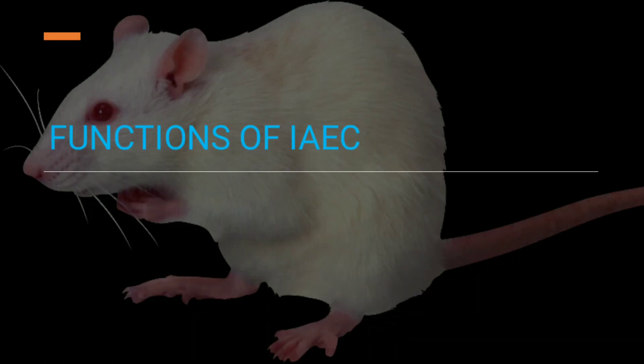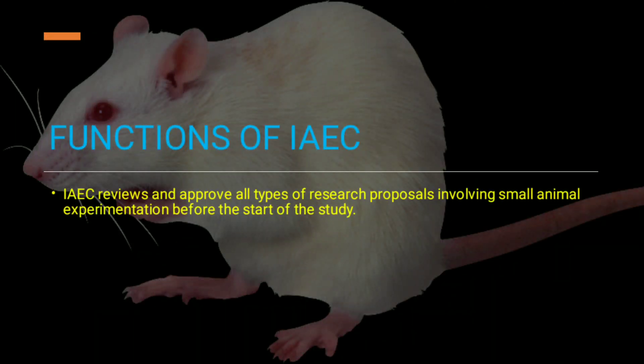Now, moving to the next point — the functions of this committee. The first function of IAEC is to review and approve all types of research proposals involving small animal experiments before the start of the study. This means whatever studies are to be performed on animals, this committee is going to review and then approve whether the experiment is to be conducted or not.